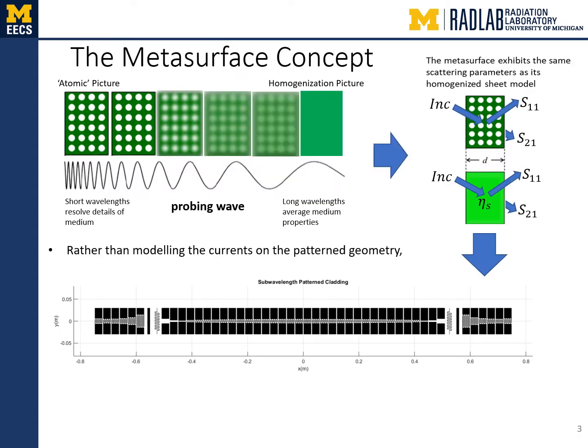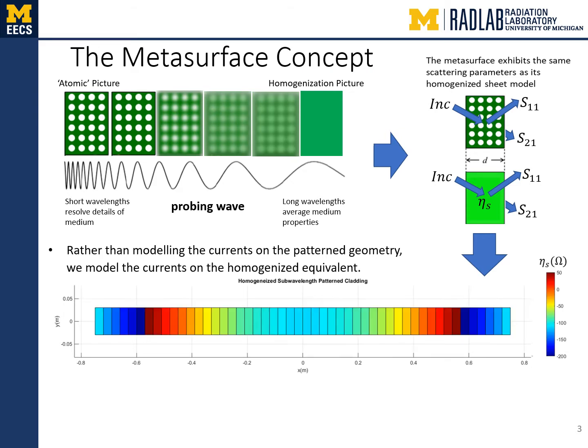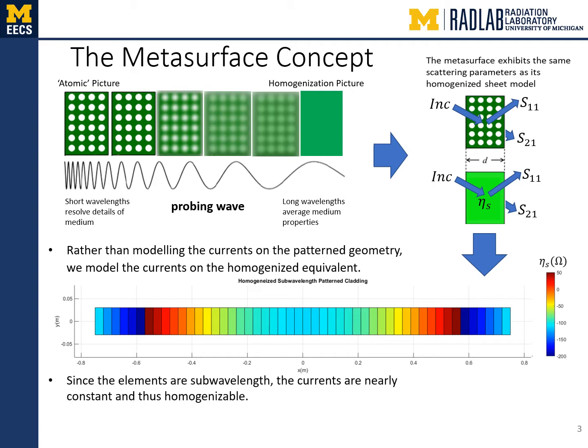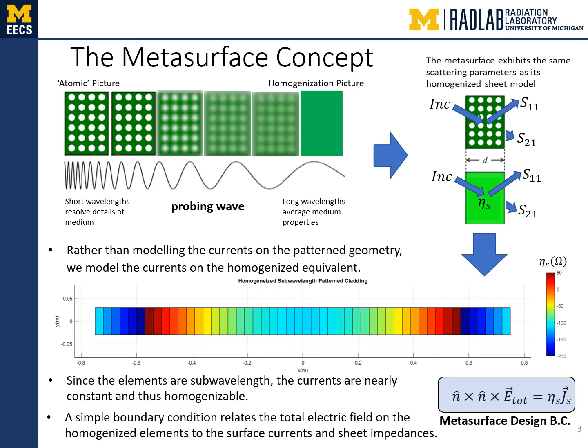Here we briefly describe the metasurface concept. The fine features of the subwavelength reflectory elements are homogenized when the probing wavelength becomes long and the medium properties become averaged. The metasurface will exhibit the same scattering parameters as its homogenized sheet model. Rather than modeling the currents on the pattern geometry, we model the currents on the homogenized equivalent. Since the elements are subwavelength, the currents are nearly constant and thus only require a single pulse basis to model. A simple boundary condition relates the total electric field on the homogenized elements to the surface currents and sheet impedances.